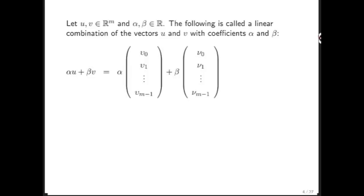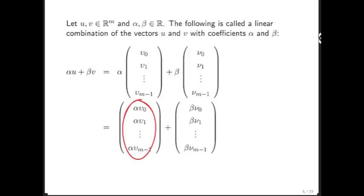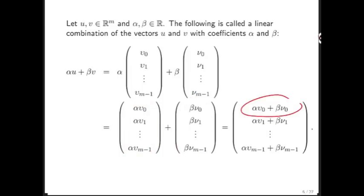If we expose the components of u and v, then what does this mean? It means that we scale the first vector, scaling each of the individual components by alpha. And we scale the components of vector v by beta.